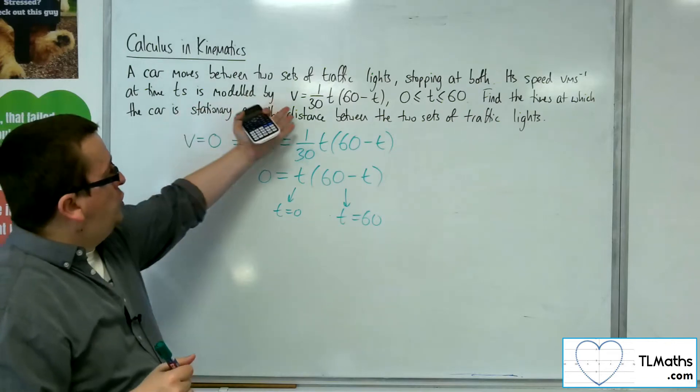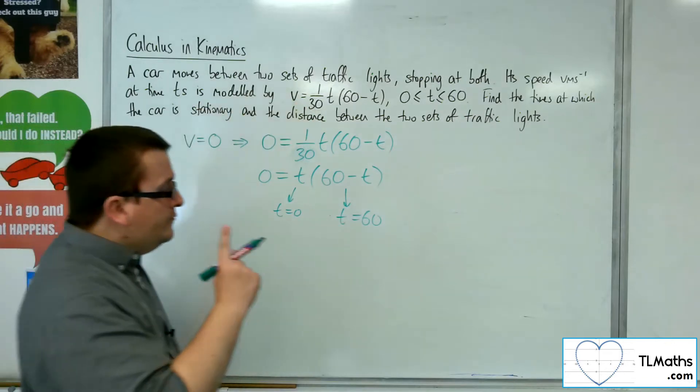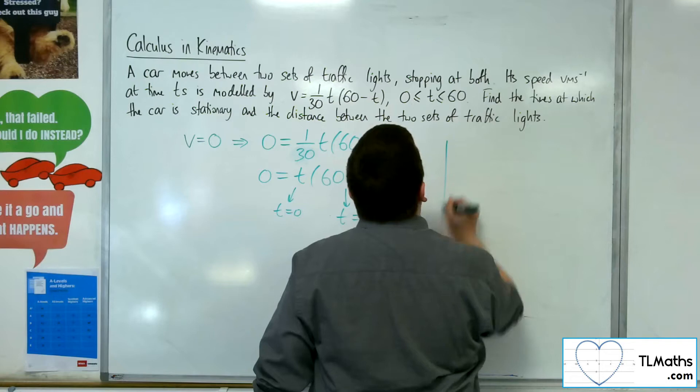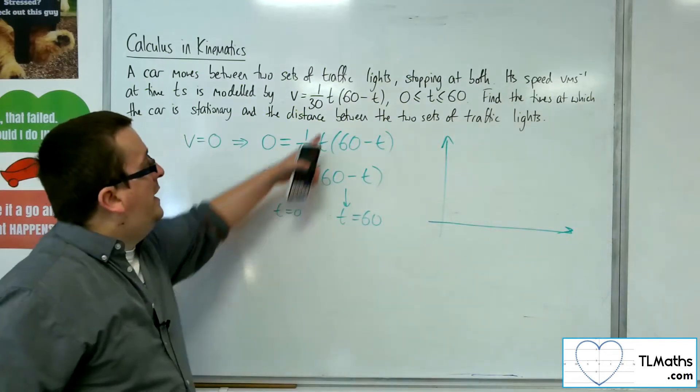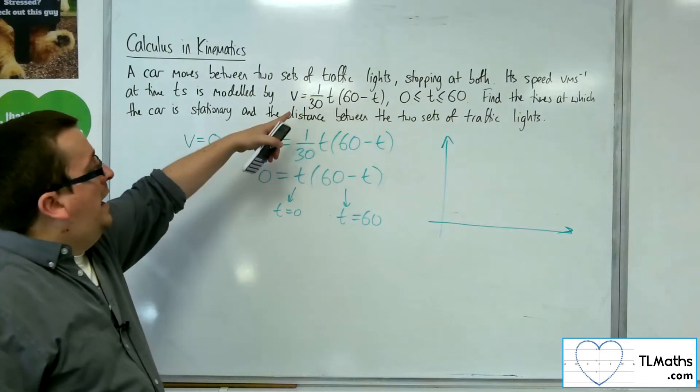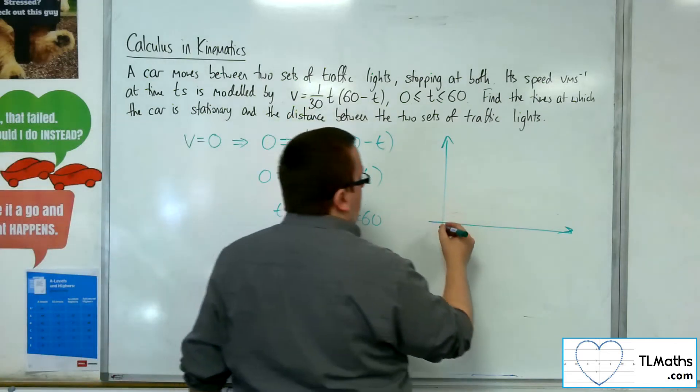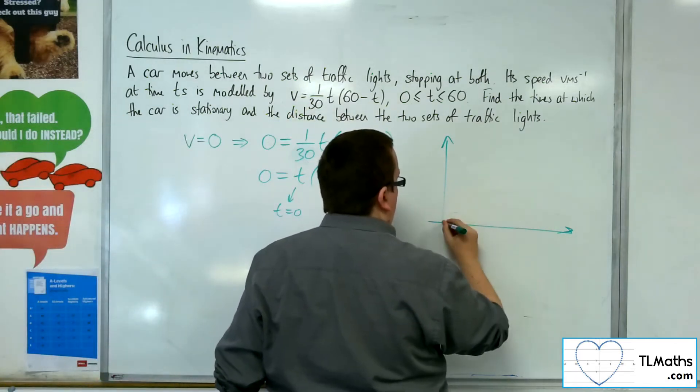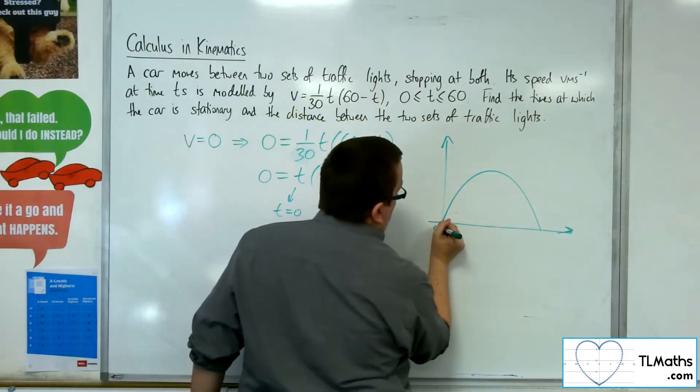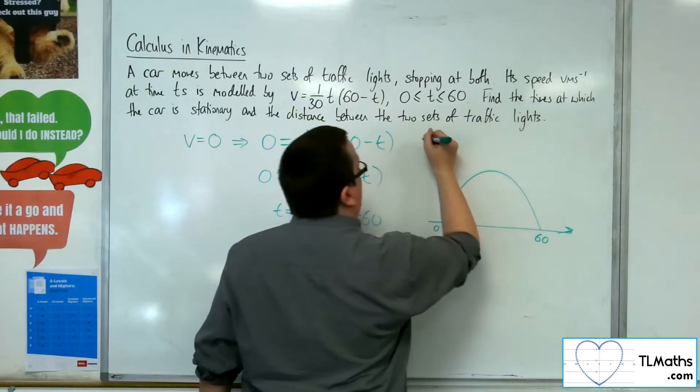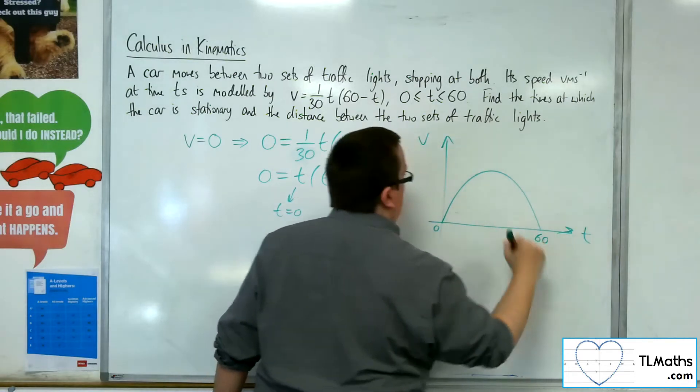Now, visually, what is happening here? Well, we can sketch out a velocity time graph, because this is a parabola with a negative t squared, and so it's looking like this, going from 0 to 60, because that is when the velocity is 0.